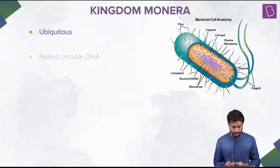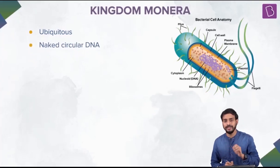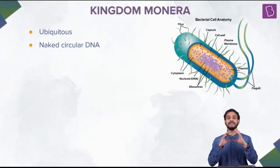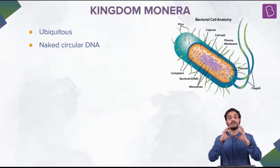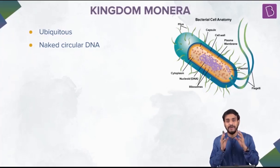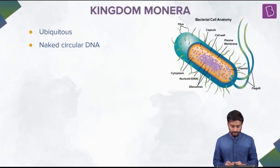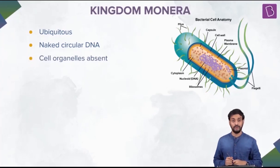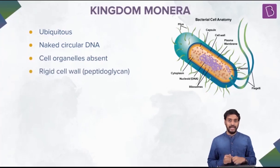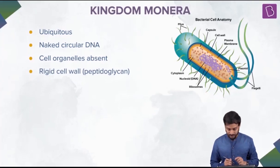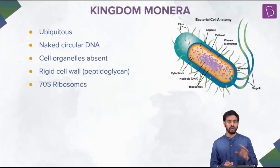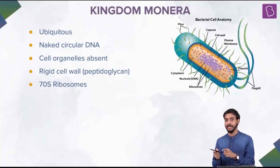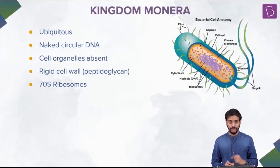These organisms are one of the most abundant microscopic organisms. They have naked circular DNA - their genetic material is naked, meaning it is not present within a membrane-bound structure. They do not have cellular organelles with a cell membrane. They have a very rigid cell wall composed of peptidoglycan, and their ribosome type is 70S, which differs from eukaryotes. We'll study these in detail in the cell chapter.